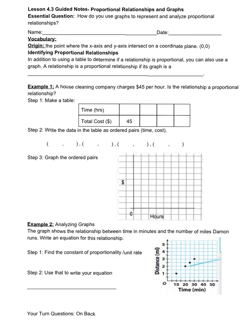We have one vocabulary term to review, and that is the origin, which is the point where the x-axis and the y-axis intersect on a coordinate plane, and that point is called (0,0).